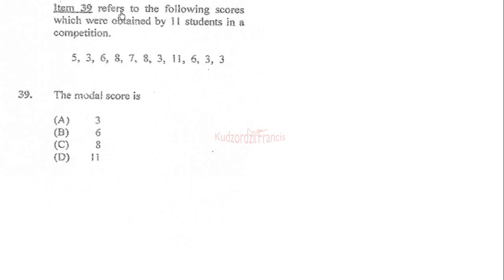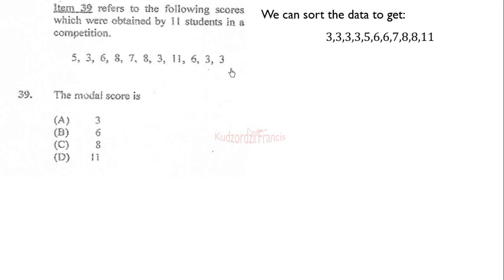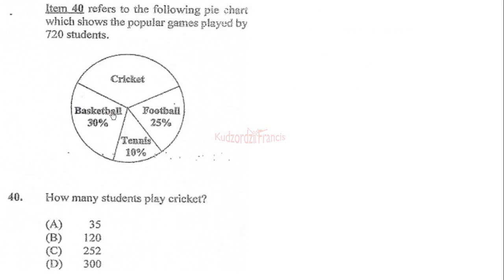Item 39 refers to the following scores obtained by 11 students in a competition: 5, 3, 6, 8, 7, 8, 3, 11, 6, 3, 3. Rearranging these, the modal score is the one with the highest frequency. The number 3 appears 4 times, while 6 and 8 each appear twice. Therefore the modal score is 3.